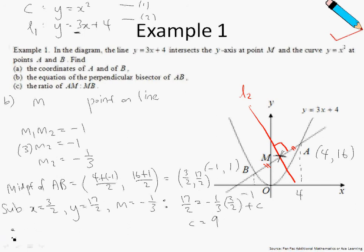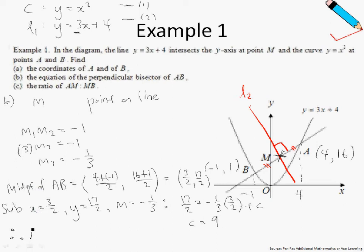Finally, the equation of the perpendicular bisector, which I denote as L2, is y equals negative one third x plus 9. This is the answer for part B.